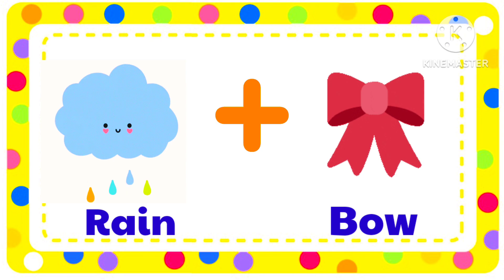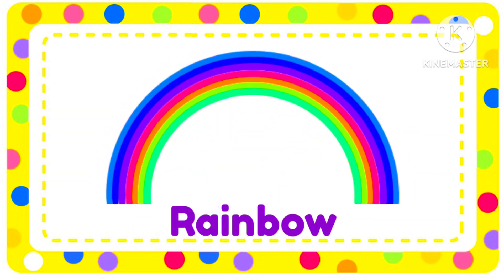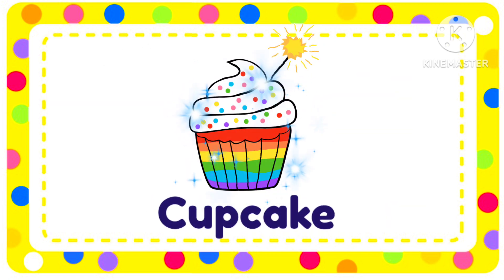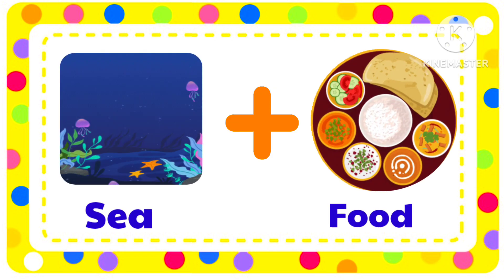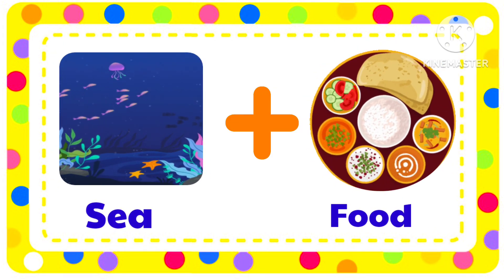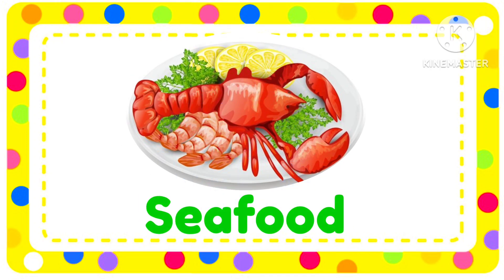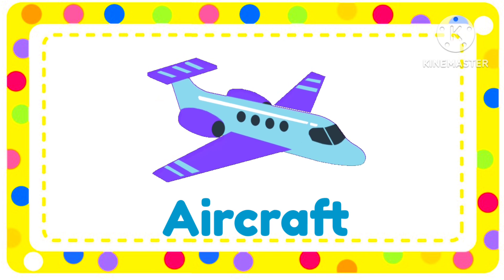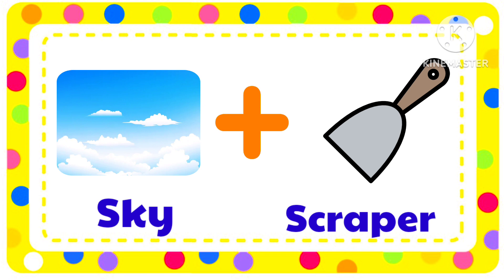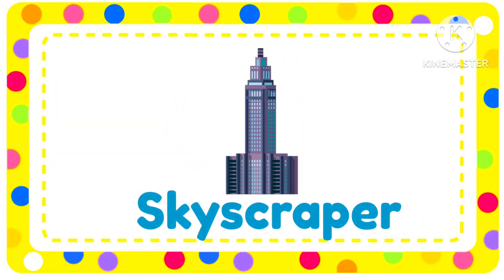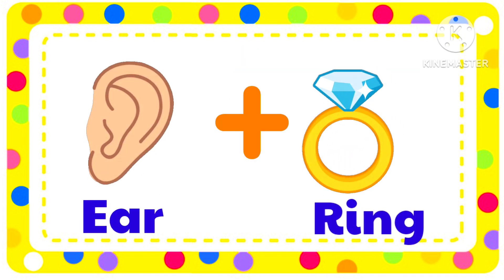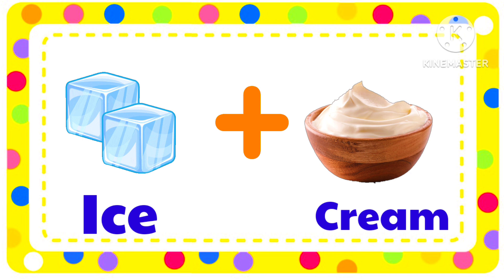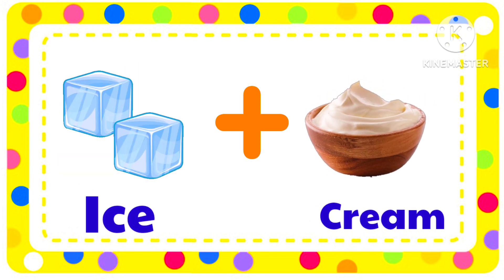Rain plus Bow — Rainbow. Cup plus Cake — Cupcake. Sea plus Food — Seafood. Air plus Craft — Aircraft. Sky plus Scraper — Skyscraper. Ear plus Ring — Earring. Ice plus Cream — Ice cream.